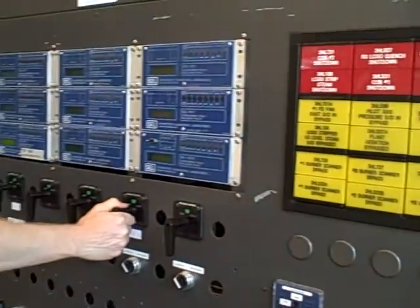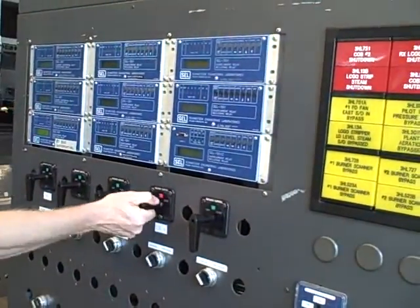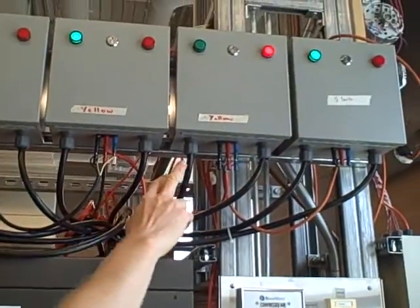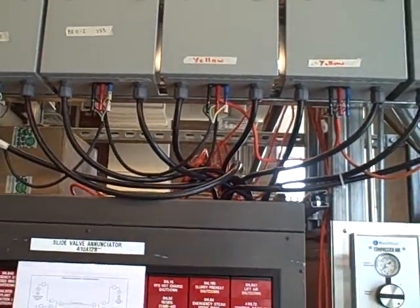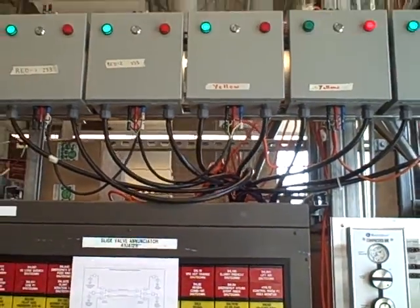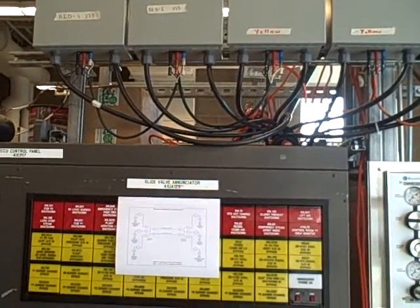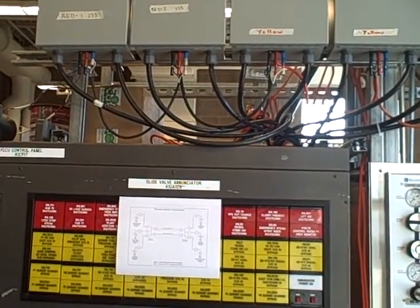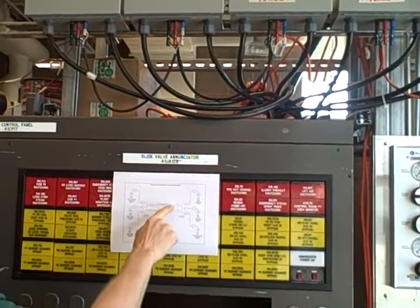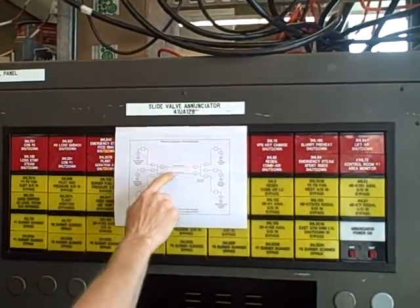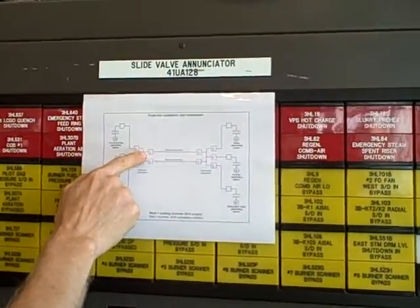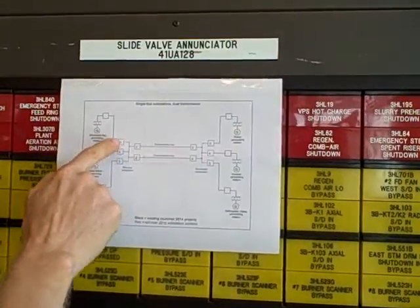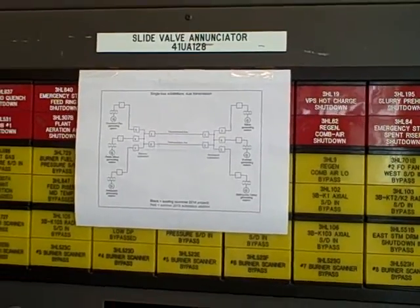Breaker number four is closed. I'm looking up there — we see a red light on breaker number four. So right now that bus is energized. It is hot — it is ready to power something. In this case, the thing we're going to be powering is that shorted fault on that transmission line. After closing breaker four, I will now close breaker one, and that will introduce the fault to the system.